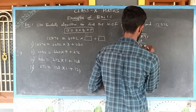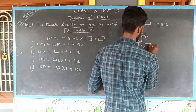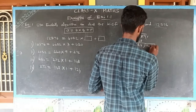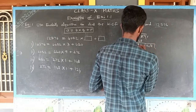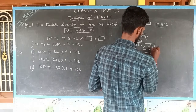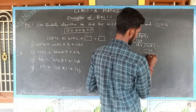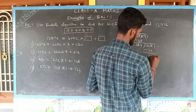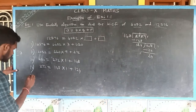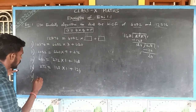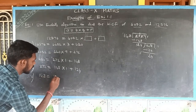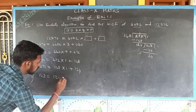In the next step, 124 becomes the divisor and 148 becomes the dividend. 124 × 1 = 124. Subtracting: 148 − 124 = 24. So 148 = 124 × 1 + 24.